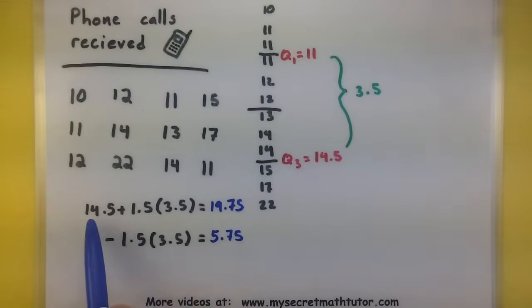If I have any data points that are larger than 19.75, they're an outlier. And if I have any data points that are smaller than 5.75, those are outliers.